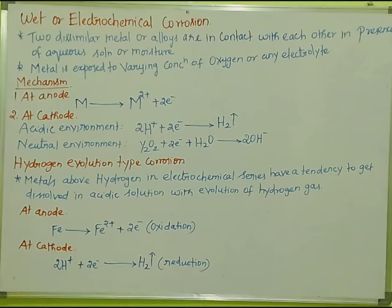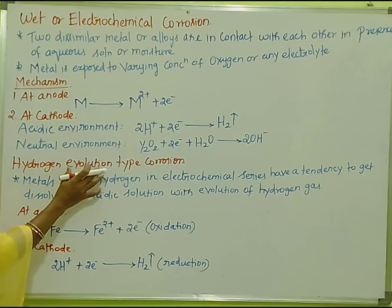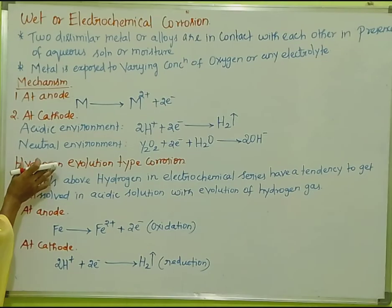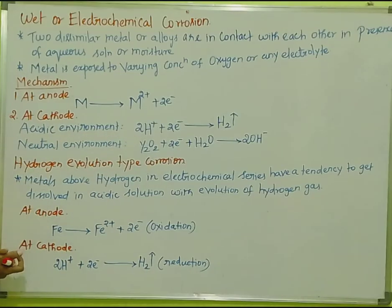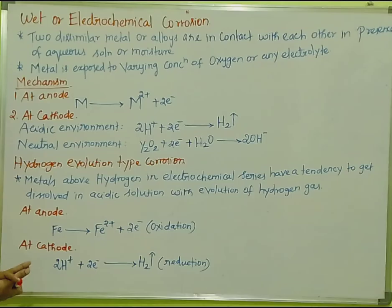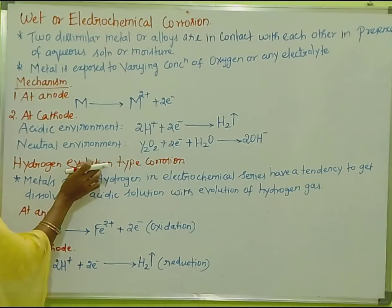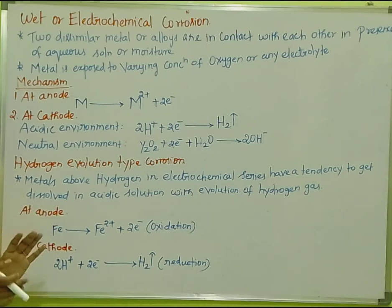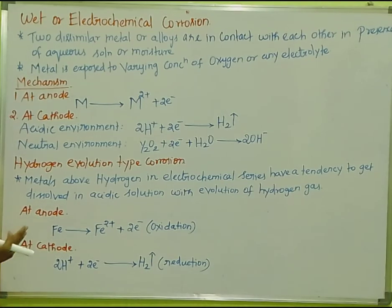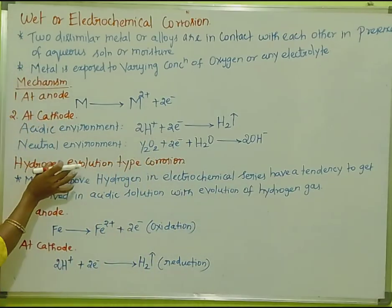There are two types of wet corrosion: hydrogen evolution type corrosion and the type involving formation of hydroxide ions. In hydrogen evolution type corrosion, when metals are dissolved in an acidic solution, hydrogen gas is evolved. According to the electrochemical series, all metals above hydrogen will dissolve in acidic solution and hydrogen gas will evolve.